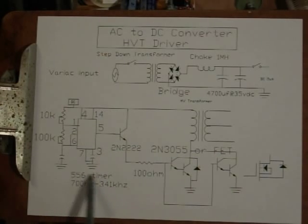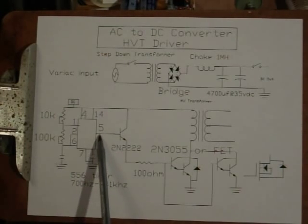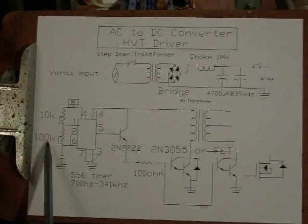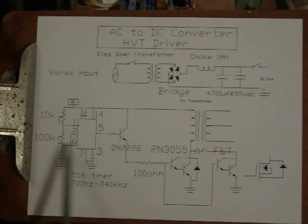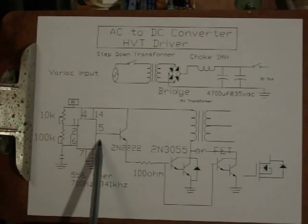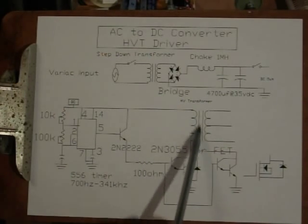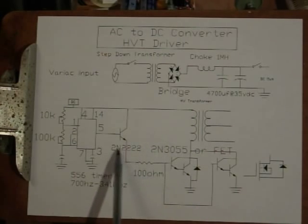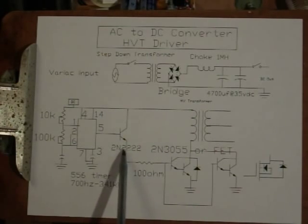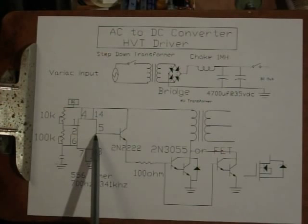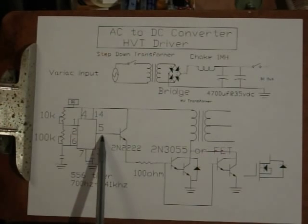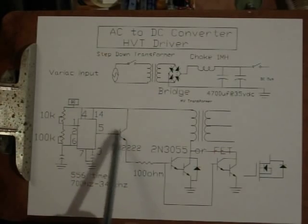You can use any kind of timer you want to give you a square wave. I got 100k, 10k. This 100k makes this pretty touchy when you're doing the high voltage transformer resonant tuning, but you can get it. This will allow you to vary from 700Hz to 340kHz, so it gives you a good variety of pulses.